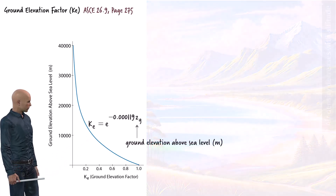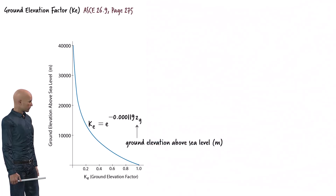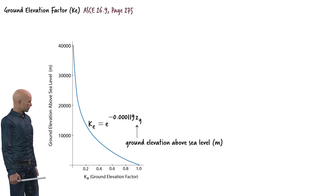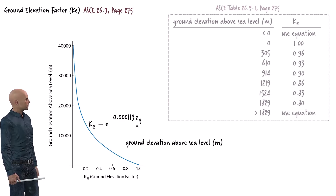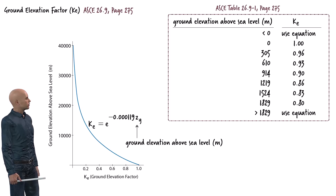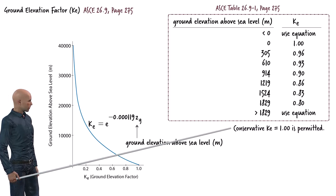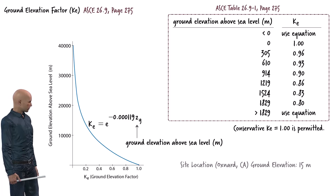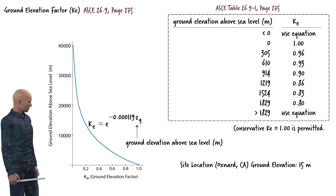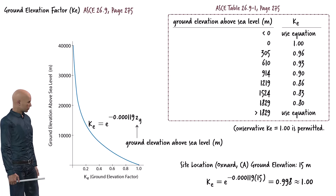Here is the mathematical equation for KE. The equation is derived from the standard atmospheric model, which defines how air pressure and density decrease exponentially with altitude based on empirical observations and physical principles. ASCE 7 provides a table of KE values for specific elevations, so we can use either the table or the equation. Alternatively, for elevations above sea level, a conservative value of 1 for KE can be used, as stated in the standard. Our bus terminal is located in Oxnard, California, with an average ground elevation of only 15 meters above sea level, so we expect a KE close to 1. Using the equation, we obtain a value of 0.998, which rounds to a KE of 1.